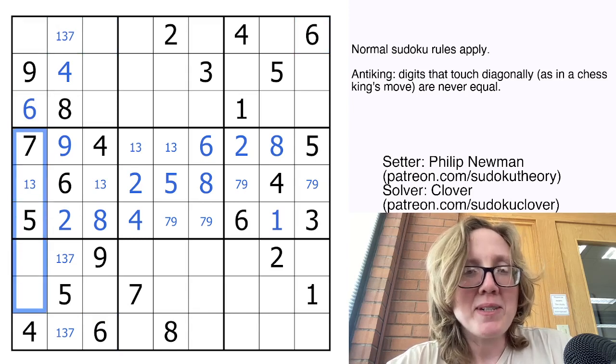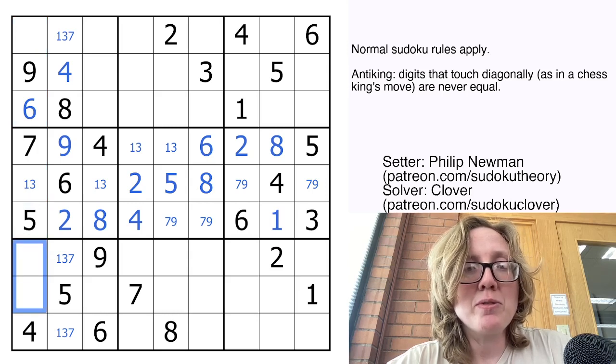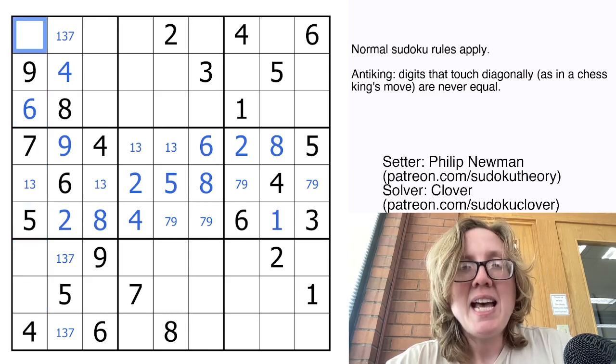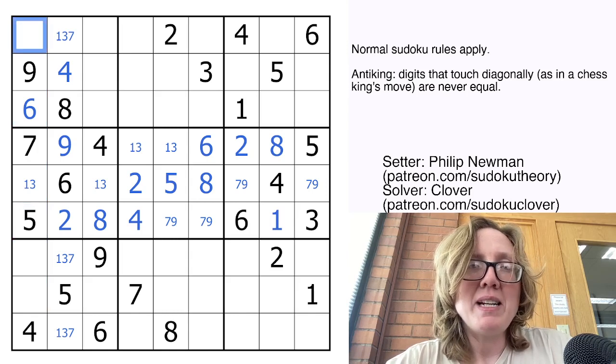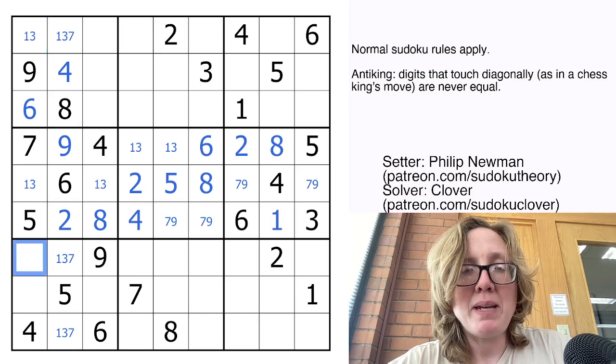That's going to make this column restricted enough that we can get something out of it, so I still need to put a 1, 2, 3, and 8 into these four cells. This cell that I have highlighted right now cannot contain a 2 or an 8, so that's a 1 or a 3, and that makes this a 1-3 pair. My 2 and 8 are going to have to go in these cells.